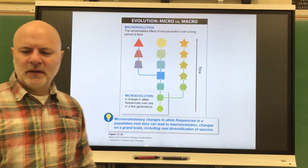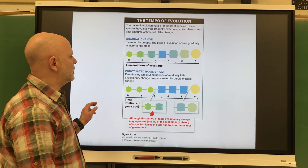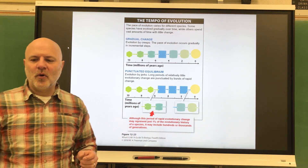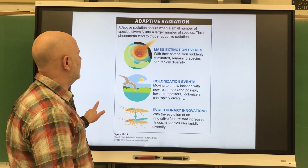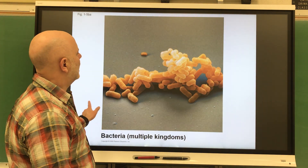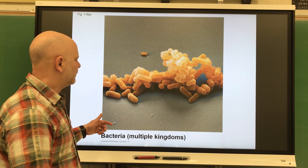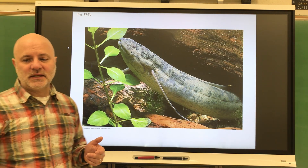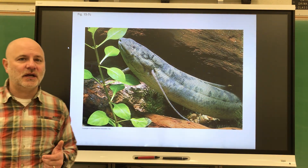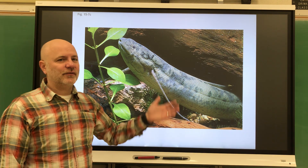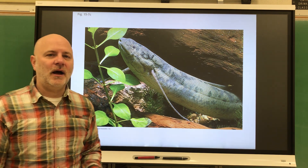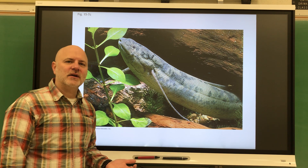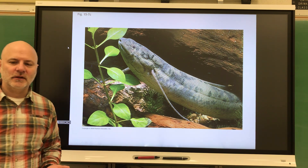Let's look at the rate of evolution. Some organisms evolve very quickly, such as bacteria. Some evolve very slowly, such as a lung fish. If we look at fossils of lung fish from 250 million years ago, they look very similar to what they look like today.